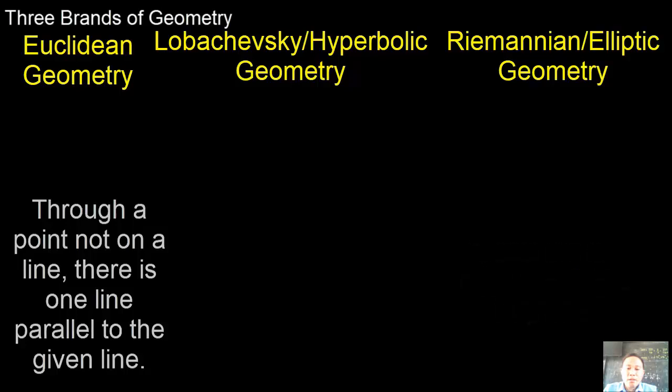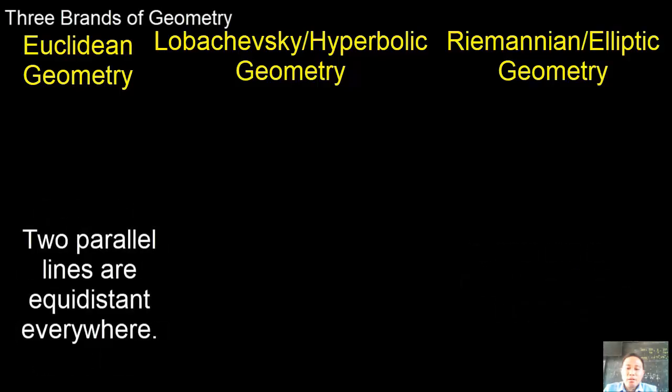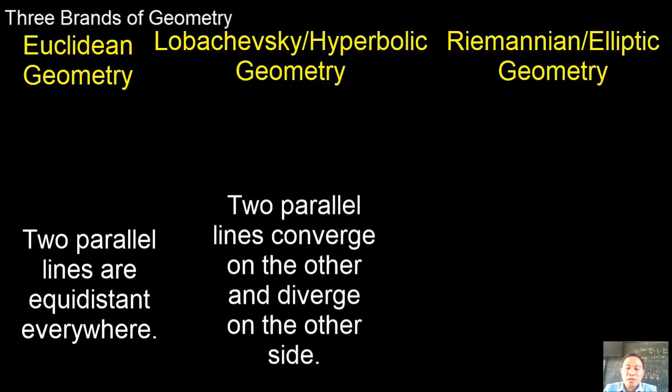So there are no parallel lines. In Euclidean geometry, two parallel lines are equidistant everywhere. In Lobachevsky geometry, two parallel lines are taken to converge in one direction and diverge in the other. And in Riemannian geometry, parallel lines do not exist.